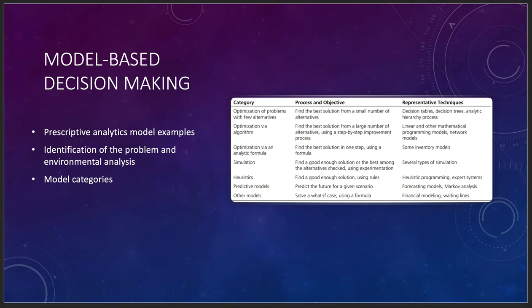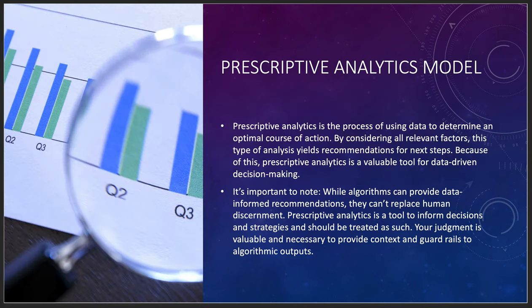Philadelphia essentially did decision-making: if you identify your core four factors, you can start making decisions about your process. We have prescriptive analytic models, identification of the problem, and environmental analysis — with model categories including predictive models, heuristics, simulations, optimizations via algorithm, and analytic formulas. There are many ways of representing data for decision-making, but you have to be able to believe the decision.